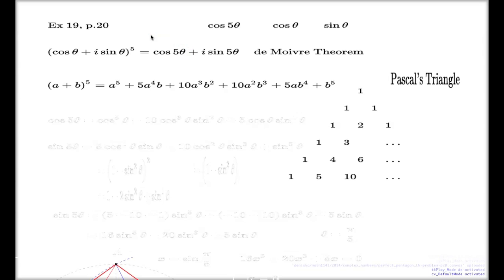When I do my expansion, I will do it in a smart way — only those terms which will give me the real part of my left hand side. Remember, every even power of i will give me a real number, plus or minus one depending on the power. Every odd power of i will give me i, and those I will discard. So out of this expansion, I will only focus on the even powers of b.